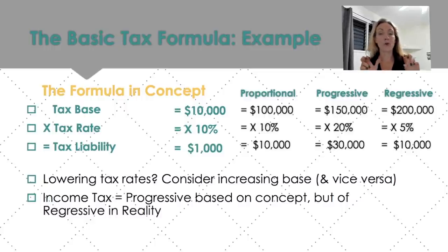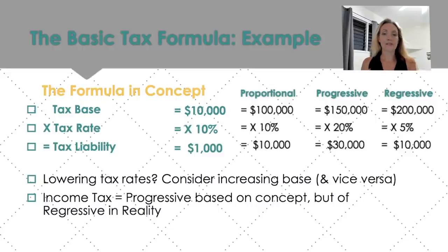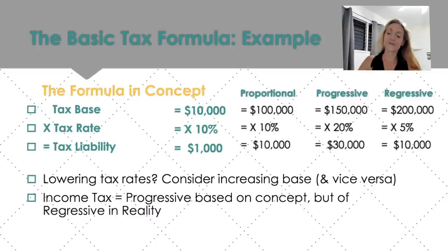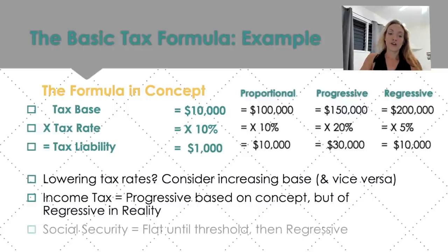When I worked for the Big Four — PricewaterhouseCoopers and KPMG — we would do high net worth individuals who ran the businesses we were doing returns for. I remember one couple who owed $500,000. My boss said 'so much money,' and I took their total income that year and divided it by the $500,000. It came out to something like 5%, which is incredibly low. We're all paying more than 5%.